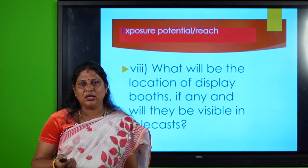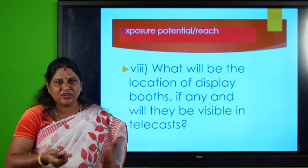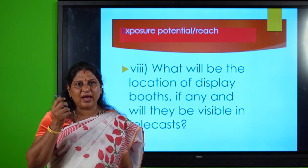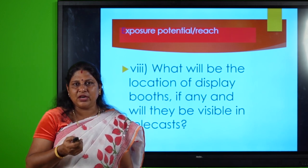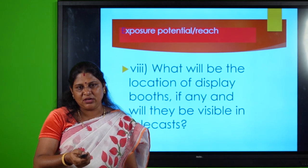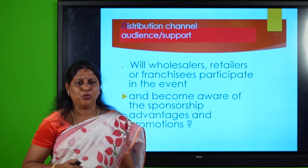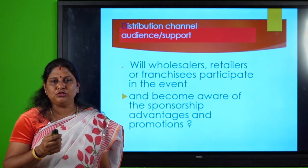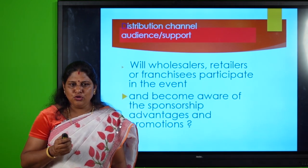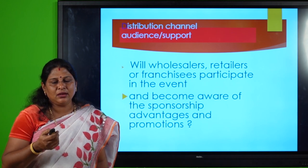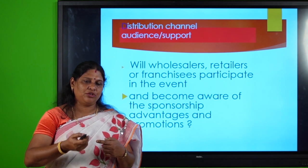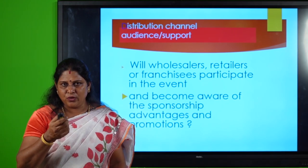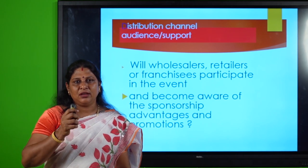You can see examples in IPL matches or cricket matches — banners of various advertisers covered at the back, or in cinematic events where backdrops are kept. You have to mention very clearly where you are going to keep their banners, otherwise it becomes a big issue. Distribution channel audience support — will wholesalers, retailers, or franchises participate in the event? For example, if you are going to introduce a new product like a levitation pen, you must clearly mention whether stationery wholesalers, franchises, or retailers are going to witness and become aware of the sponsorship advantages.